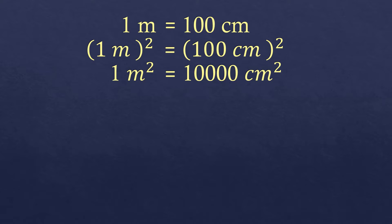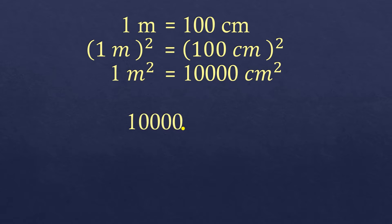So that's the conversion: 1 square meter equals 10,000 square centimeters. As you observe, to convert from square meters to square centimeters, you take the number, place the imaginary decimal point at the right of any whole number, and move that decimal point four times to the right to get those four zeros — that is, 10,000 square centimeters.